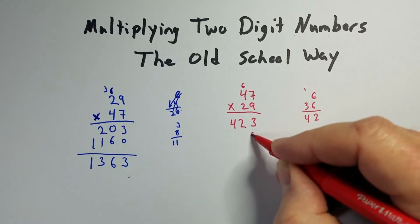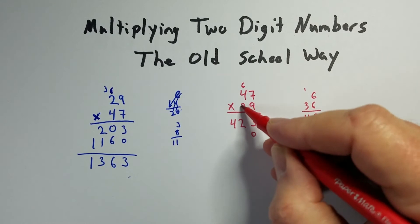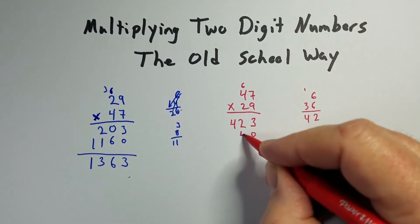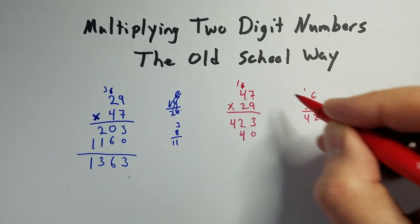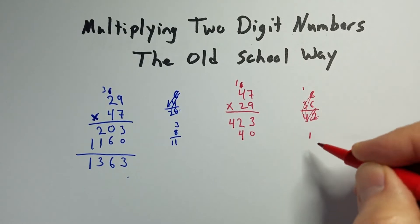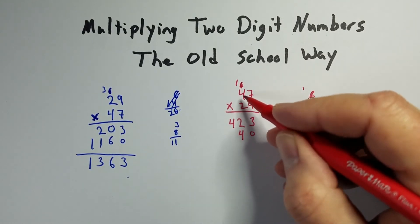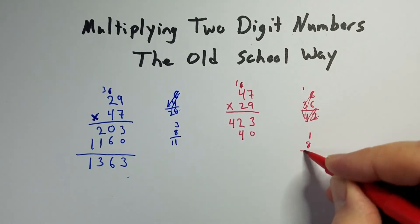2 times 7. Put that placeholder there. 2 times 7 is 14. So 4 comes down, 1 goes up. 2 times 4 is 8. But we already have a 1, so that makes a 9.